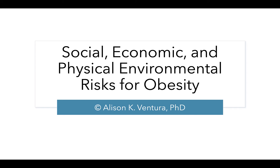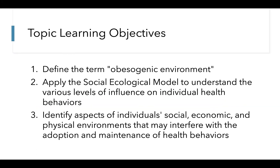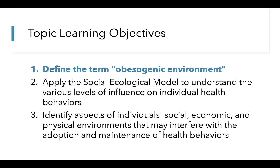In this series of videos, you'll learn how our social, economic, and physical environments affect our health behaviors and our risk for obesity. We have three learning objectives for this topic. By the end of this series, you will be able to define the term obesogenic environment, apply the social ecological model to understand the various levels of influence on an individual's health behaviors, and identify aspects of individual's social, economic, and physical environments that may interfere with the adoption and maintenance of health behaviors. This first video will teach you about the first learning objective: to define the term obesogenic environment.